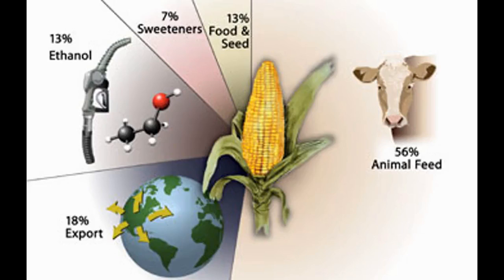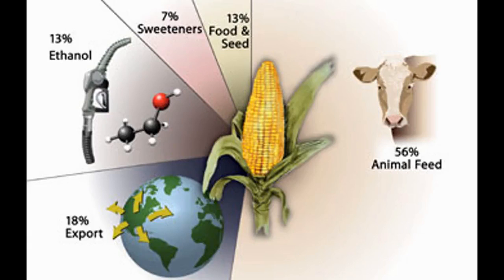The bioavailability of phytate phosphorus can be increased by supplementation of the diet with the enzyme phytase. Also, viable low phytic acid mutant lines have been developed in several crop species in which the seeds have drastically reduced levels of phytic acid and concomitant increases in inorganic phosphorus.